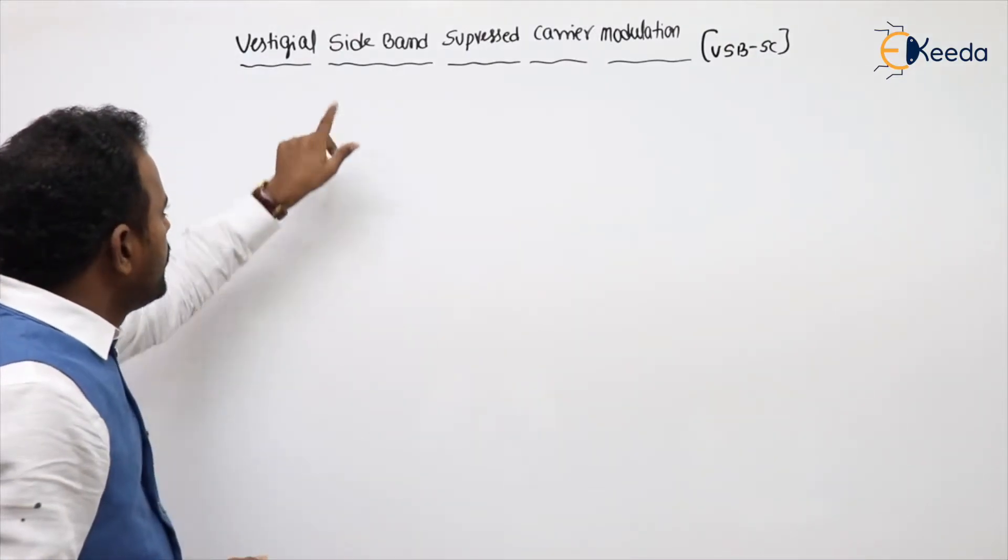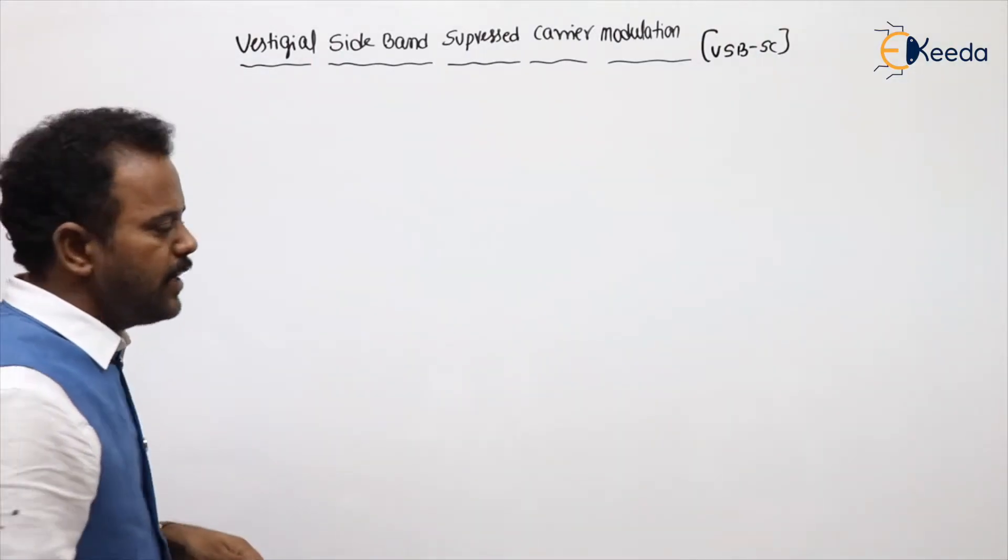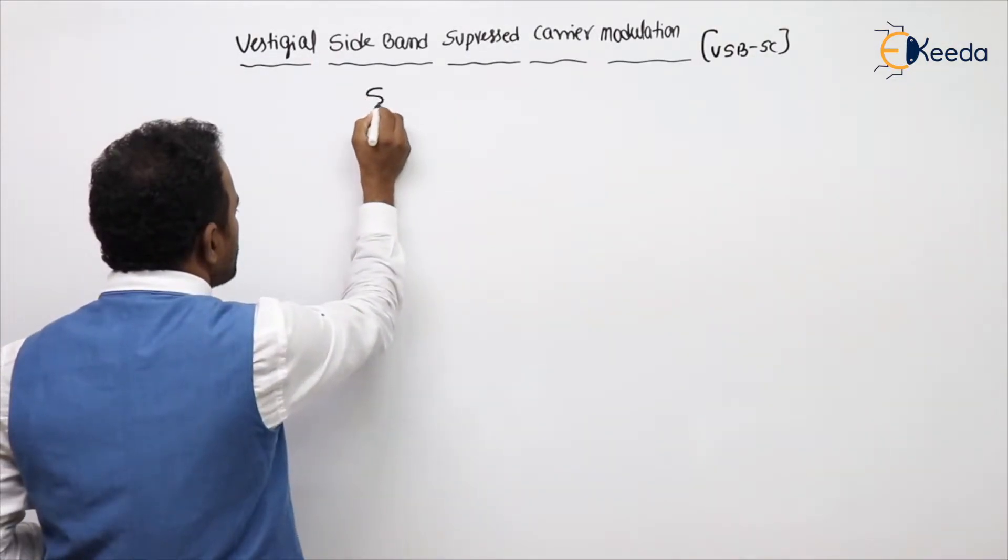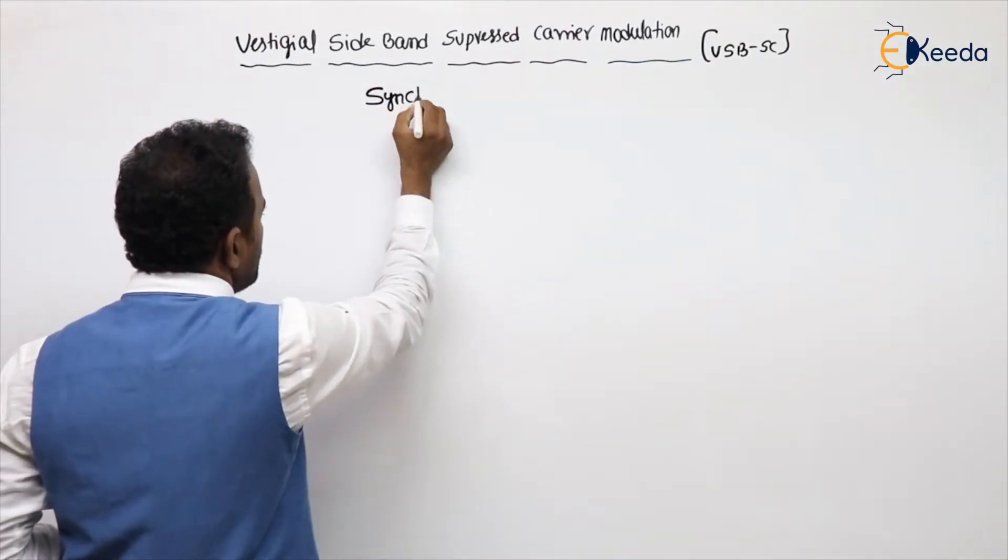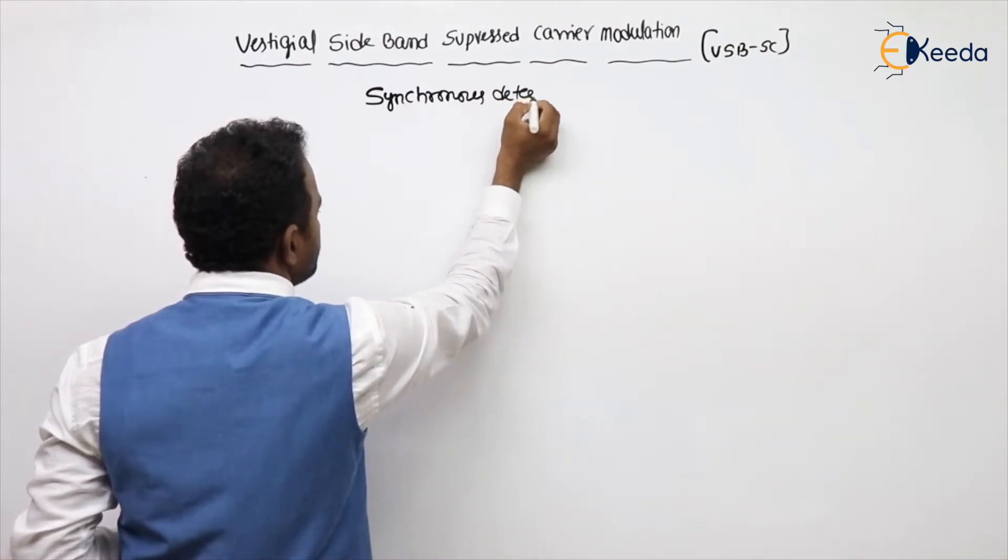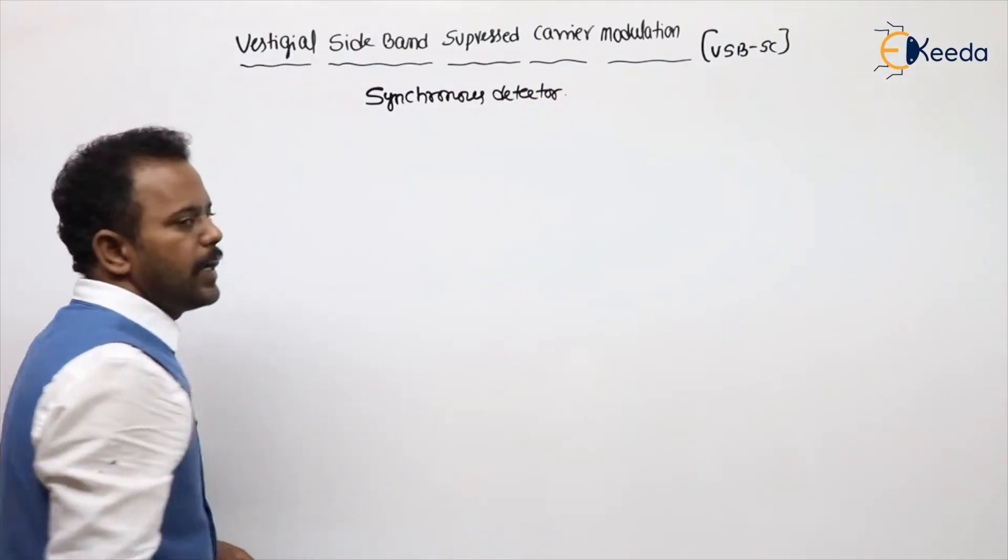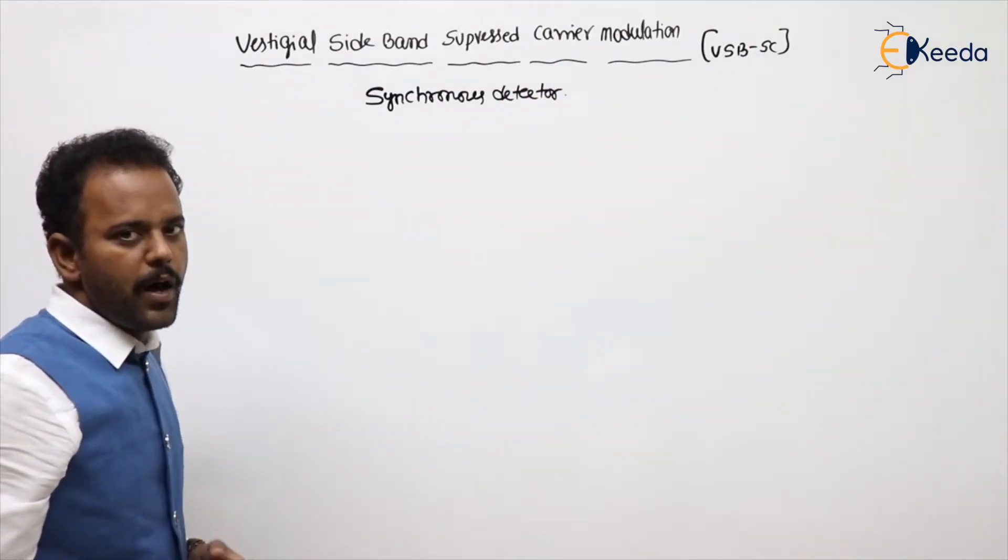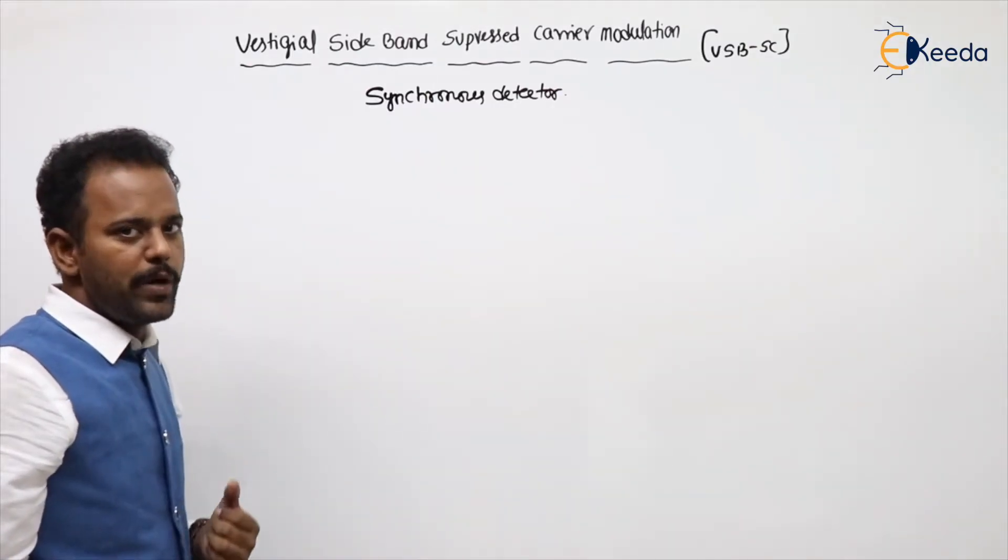Coming to the demodulation of VSBSC, for the demodulation we are having the same synchronous detector, same modification means the same block diagram: multiplier followed by low pass filter.